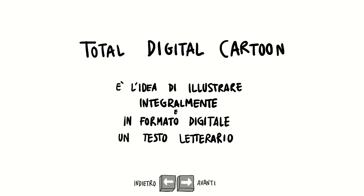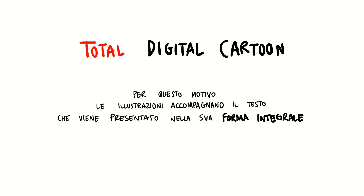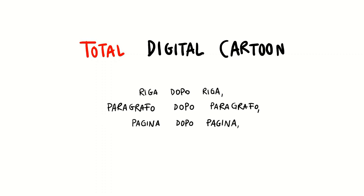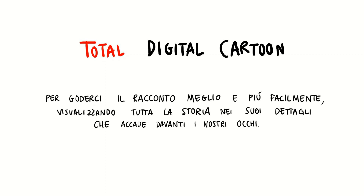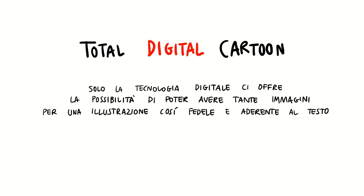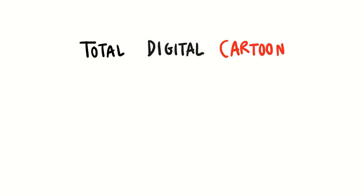Questo progetto fa parte di un progetto più ampio che è Total Digital Cartoon, con l'idea di illustrare dei testi letterari in maniera totale. Si illustra tutto il testo presentato in maniera integrale - non c'è una riduzione del testo, è totale. Si disegna tutto quello che è disegnabile, creando una sorta di doppio binario dell'esperienza del testo: un binario completamente visivo. È digitale perché le immagini necessarie sono talmente tante che il cartaceo non sarebbe possibile, ed è molto più versatile.